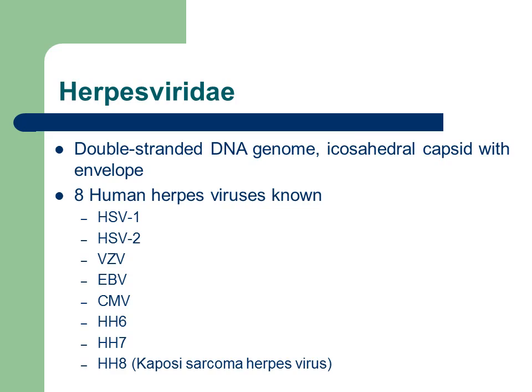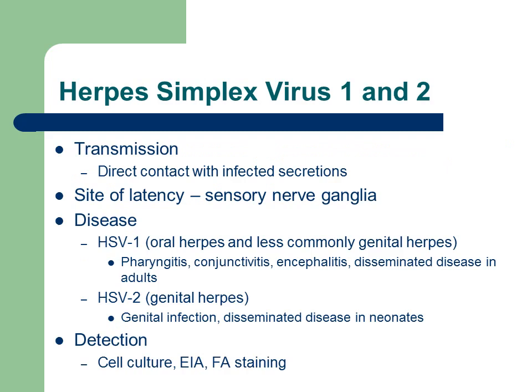Human herpes virus 8 is also known as the Kaposi sarcoma herpes virus. Now we're going to talk about some of these herpes viruses. Herpes simplex virus 1 and 2 are transmitted through direct contact with infected secretions. They can, and many times do, remain latent — many people are latently infected with herpes simplex virus. These viruses remain latent in the sensory nerve ganglia cells.